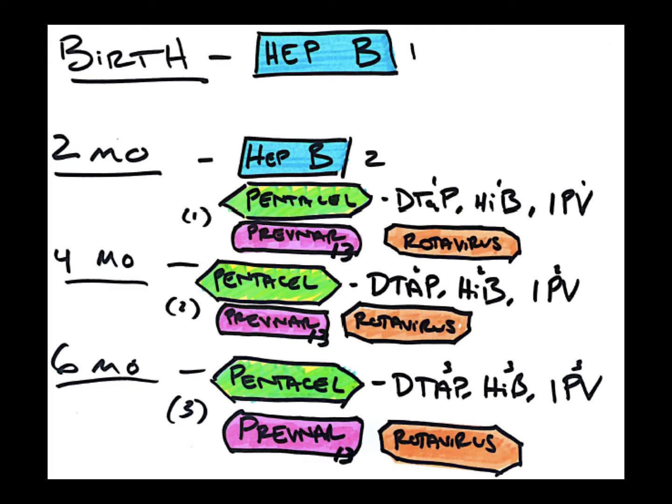Pentacil is a vaccine that is composed of DTaP, Haemophilus Influenza B, and inactivated polio. So it's actually a way of giving three vaccines at once.